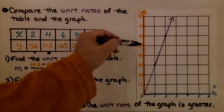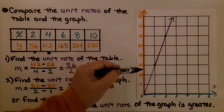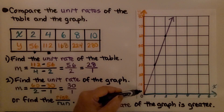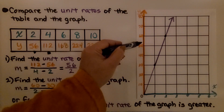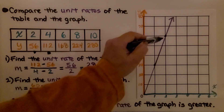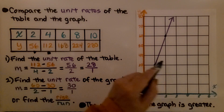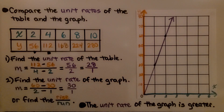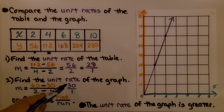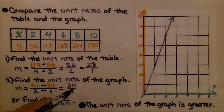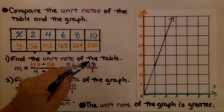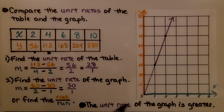Since each grid line represents 10 on the scale — going 10, 20, 30, 40, 50, 60 — we can read the rise over run as 30 over 1, just as we calculated. The unit rate of the graph is greater: 30 over 1 versus the table's 28 over 1, so the graph's unit rate is greater.